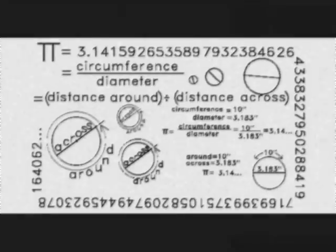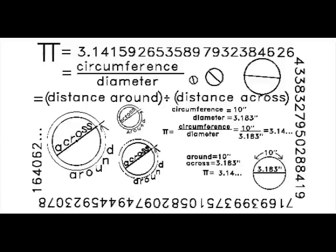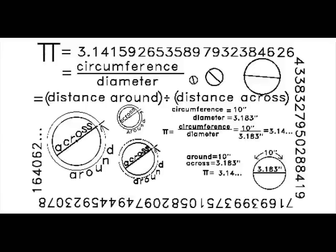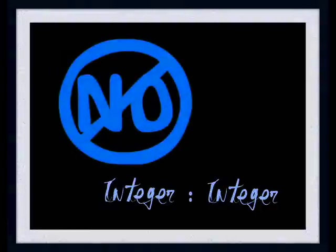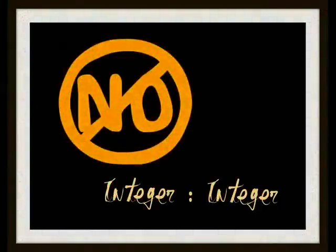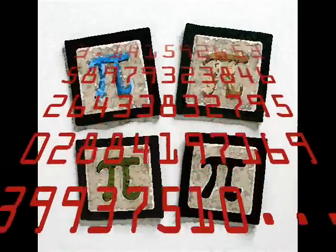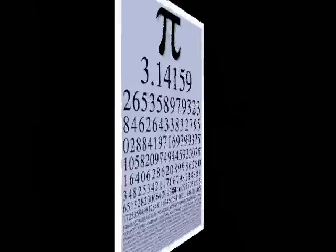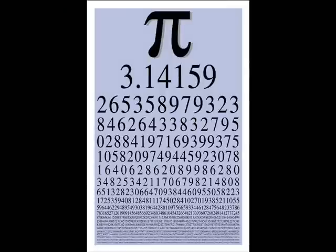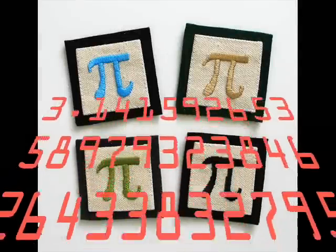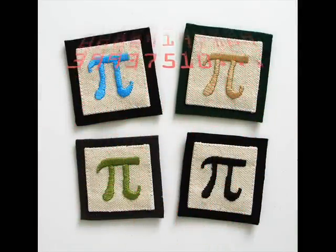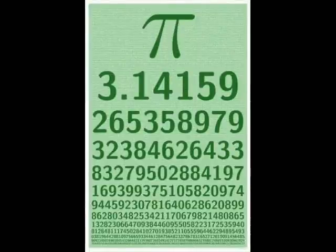I know that you need it, to calculate it. You want it bad, you need that pie so bad. Because you know that it's the ratio of circumference to diameter. It can't be written as the ratio of any two integers. The endless number. The endless number.